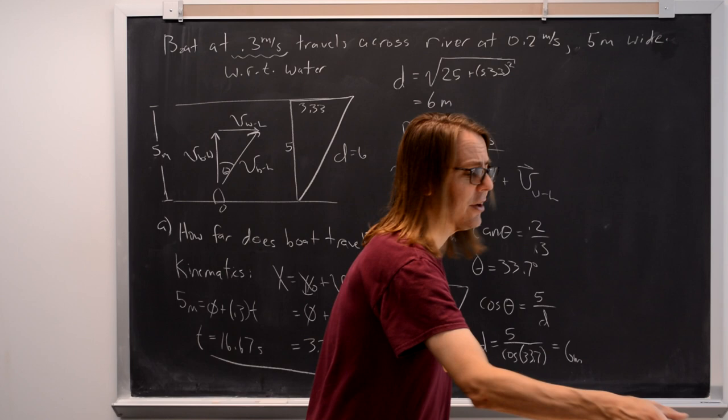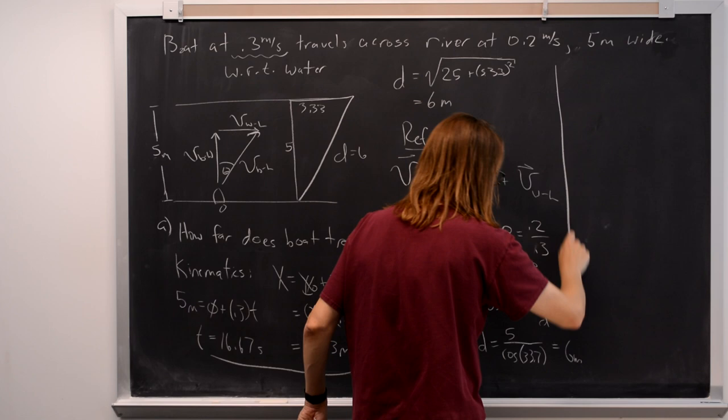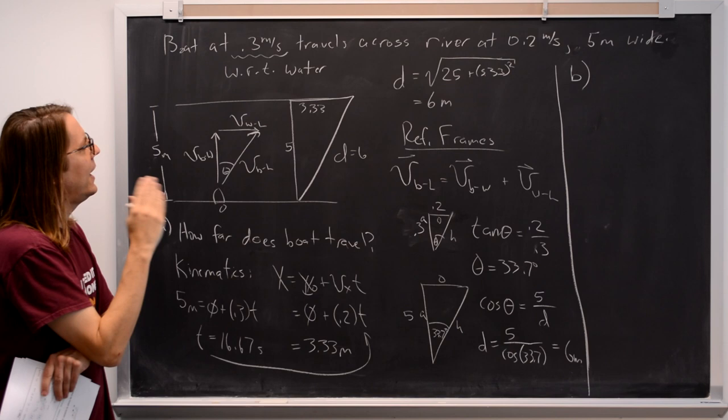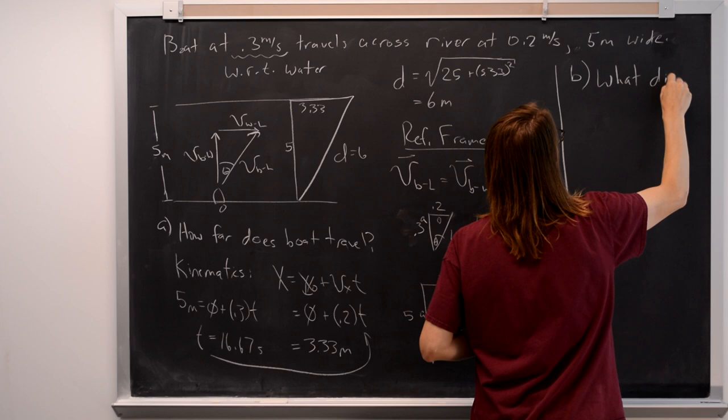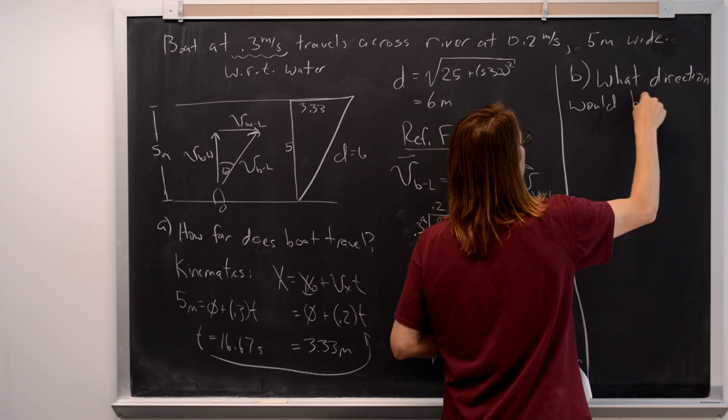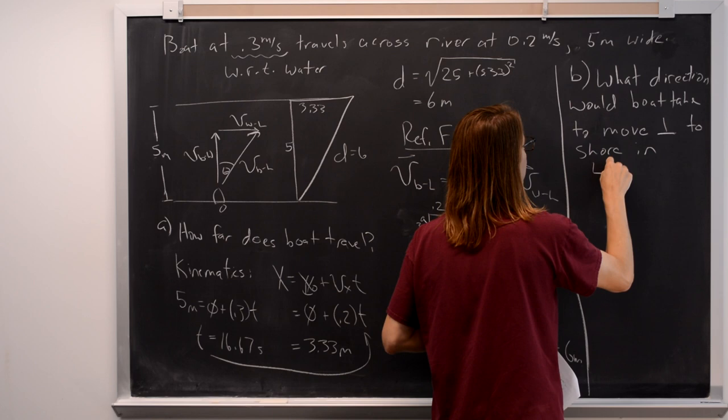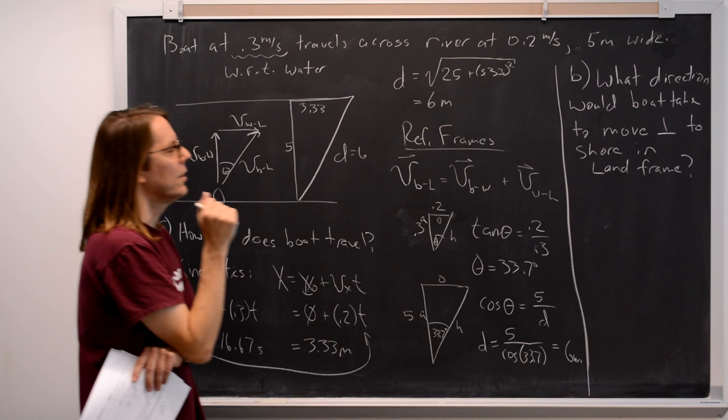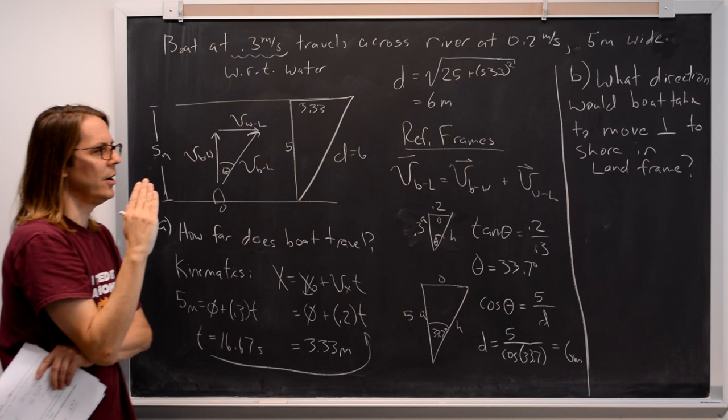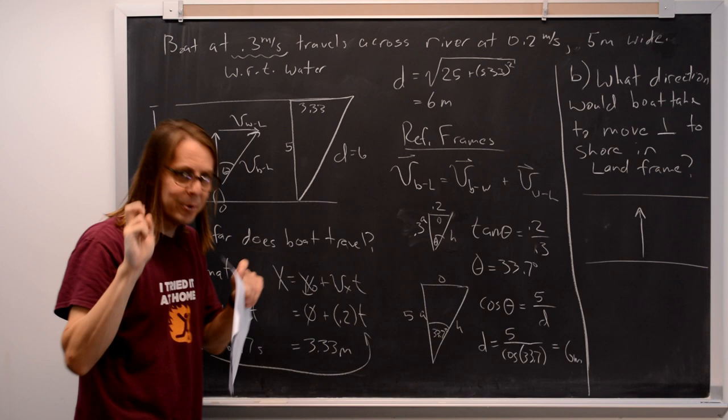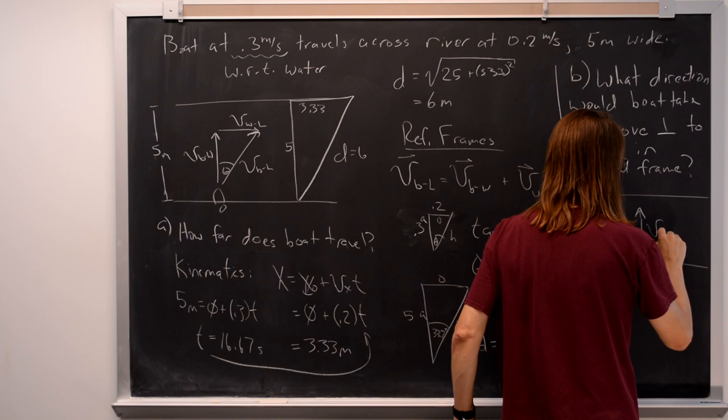A second question that would be good to ask here is what direction would the boat take to move perpendicular to the shore in the land frame? So we described the case where the boat thinks it's going perpendicular and the water is just pushing it to the side. But what if we wanted it to really do this? Here is the river and we want it to really move like that. The velocity of the boat in the land frame.